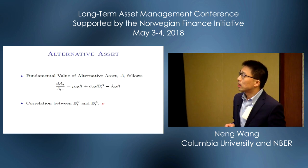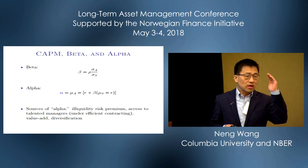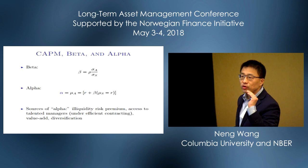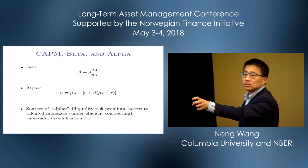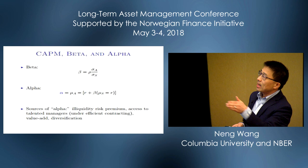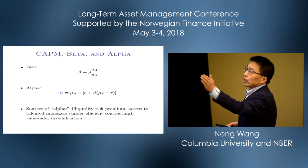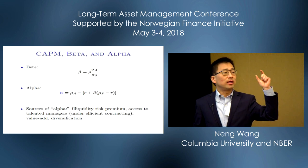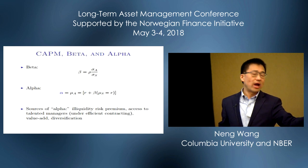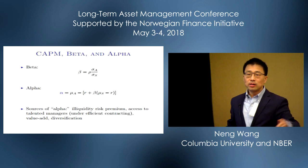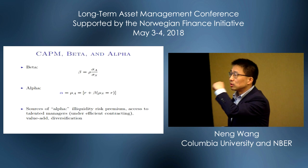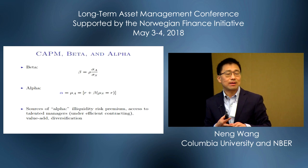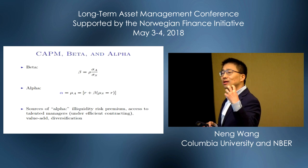Because it's a one-factor model, think about this conceptually: if you could run a regression of the alternative asset on the public stock market, you get a beta coefficient — call it beta_A — which is the spanned volatility divided by the stock market volatility. I'm going to mechanically define alpha as the CAPM-benchmarked alpha. It doesn't have to mean skill — it could be the illiquidity premium, or excess returns from talented managers in venture capital or similar investments. It's just a mechanical definition at this stage.